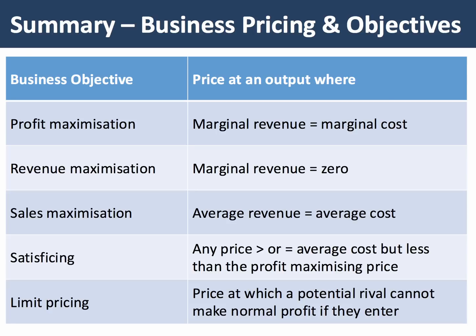Let's make a summary of business pricing and objectives. If the firm's dominant objective is profit maximisation, they'll choose output where marginal revenue equals marginal cost. If revenue maximisation, they'll choose output where marginal revenue equals zero. If sales maximisation, they'll choose output where average revenue equals average cost. If satisficing, that's any price greater than or equal to average cost but less than the profit maximising price. Limit pricing is another objective, where firms try to prevent profitable entry of a new rival by sacrificing some short-term profits, setting any price at which a potential rival cannot make a normal profit if they enter.